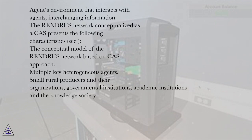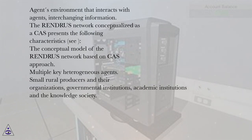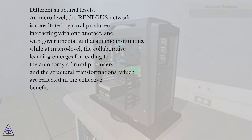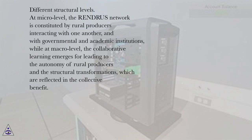The Rindris network, conceptualized as a CAS, presents the following characteristics. The conceptual model of the Rindris network based on the CAS approach includes multiple key heterogeneous agents: small rural producers and their organizations, governmental institutions, academic institutions, and the knowledge society. At the micro-level, the Rindris network is constituted by rural producers interacting with one another and with governmental and academic institutions, while at the macro-level, collaborative learning emerges, leading to the autonomy of rural producers and structural transformations reflected in collective benefit.